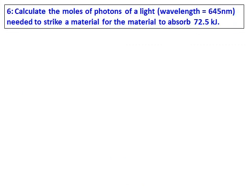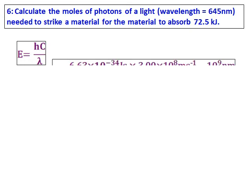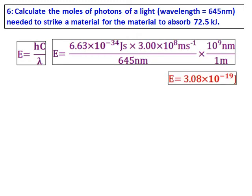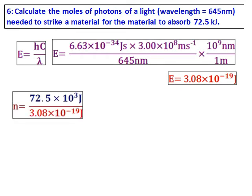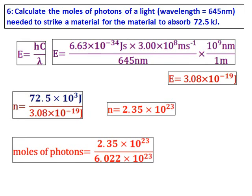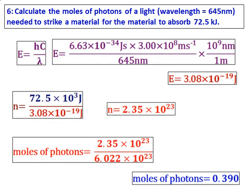Calculate the moles of photons of light — the wavelength of light is given — that are needed to strike a material for it to absorb 72.5 kilojoules. We use the same kind of formula, but what we solve for is different. The first step is to calculate the energy of the photon for the given wavelength by substituting the values of H, C, and lambda. That energy comes as 3.08 × 10 to the power of negative 19. This is the energy of the photons striking the material, and the material must absorb 72.5 kilojoules. Therefore, divide 72.5 × 10 to the power of 3 joules by the energy calculated to get the number of photons needed. Since the answer is asked in the form of moles, convert it by dividing by Avogadro's number.